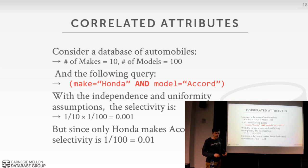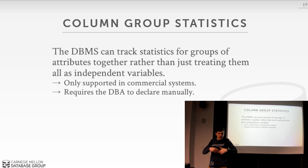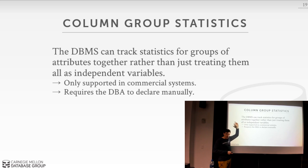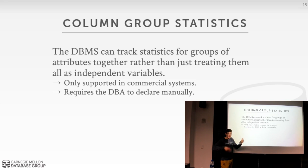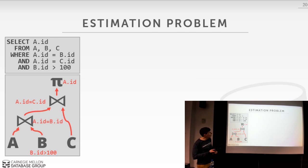One solution is to tell the database system that certain columns are correlated so it can compute selectivity for them as a group rather than independently. This can significantly improve accuracy. As far as known, this is only supported in commercial systems — it first appeared in DB2, and Microsoft and Oracle now support it as well. However, this is a manual process: the DBA must declare that, for example, 'make' and 'model' are correlated. Automating this is an exponential problem — you'd need to compare every column against every other column.